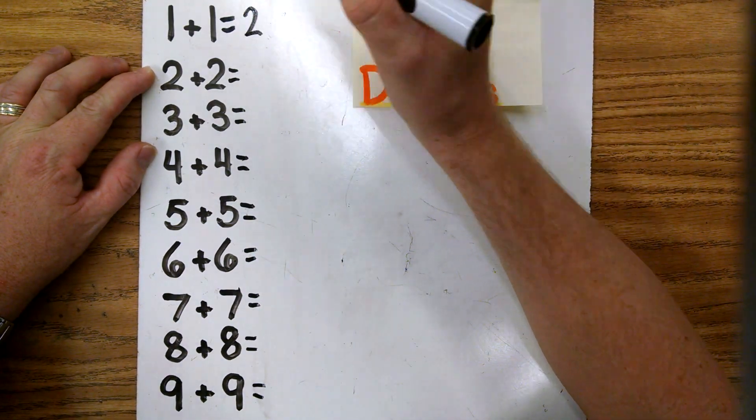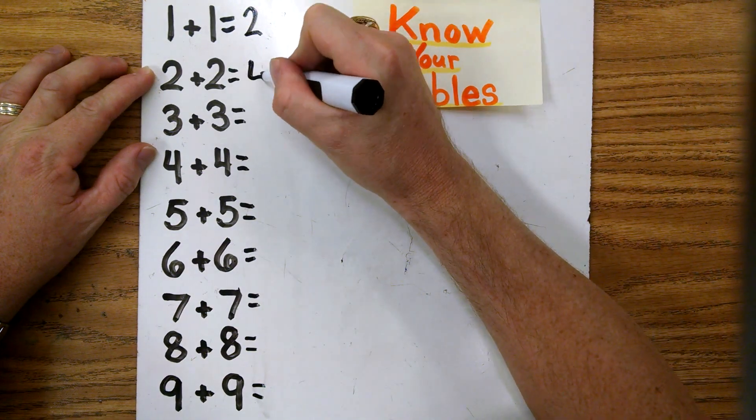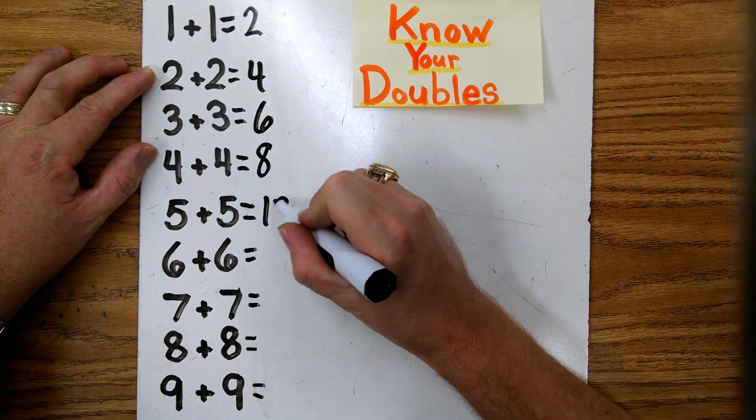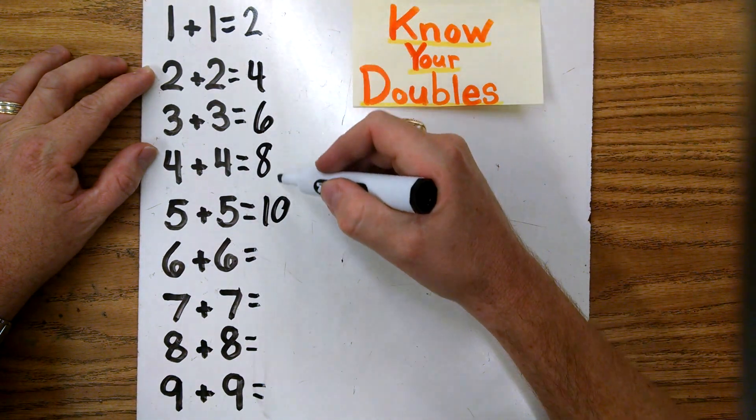And 1 plus 1 is 2. You're going to notice a pattern here. 2 plus 2 is 4. 3 plus 3 is 6. 4 plus 4 is 8. 5 plus 5 is 10. Notice the pattern? 2, 4, 6, 8, 10.